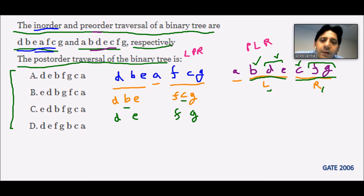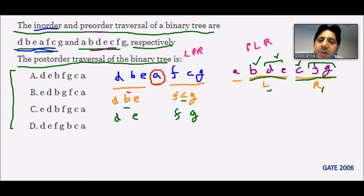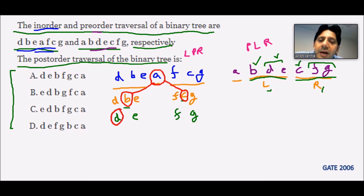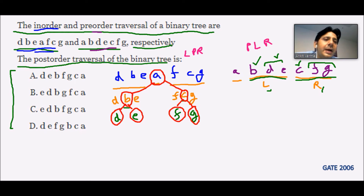We can now construct the tree easily. A is the root node. B is the left child of A and C is the right child of A. D and E are the children of B, and F and G are the children of C. The tree is now fully constructed.